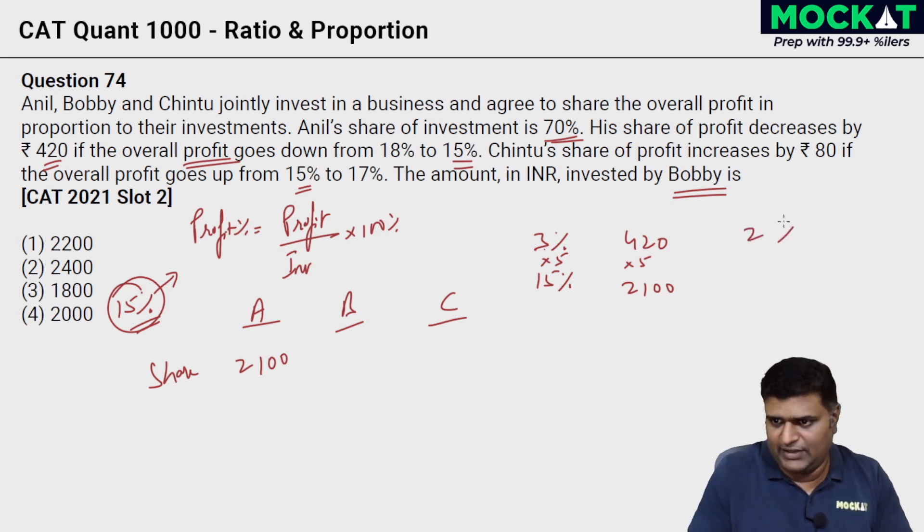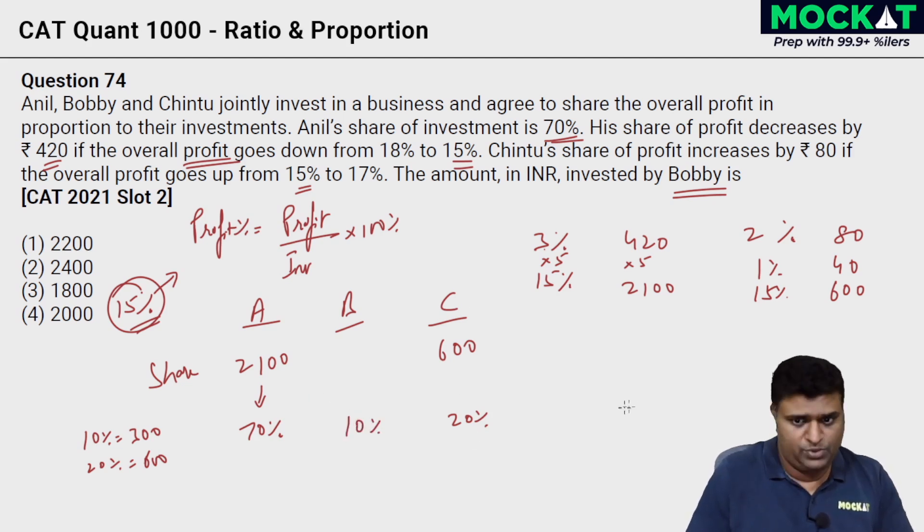Do the same for C as well. We have Chintu's share of profit increases by 80 if the overall profit goes up from 15 to 17%. So 2% in the case of Chintu is coming to 80 rupees, then 1% is half of that, 40. I need to find at 15% level what's the share? At 15%, 15 into 40, 15 into 60, we get 600. Now what else is given to us in this question? Anil's share of investment is 70%. So that means the share would have been 70%. If 70% is 2100, then what is 10% going to be? 10% is going to be 300. Then 600 would have been 20%. In the total investment, 70% is that pertaining to A, 20% is that pertaining to C. Then B would have been 10% over here, the remaining out of 100%. If 20% is 600, 10% has to be 300, would have been the share of profit.